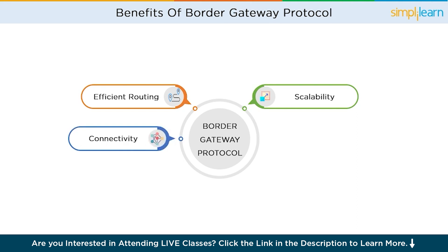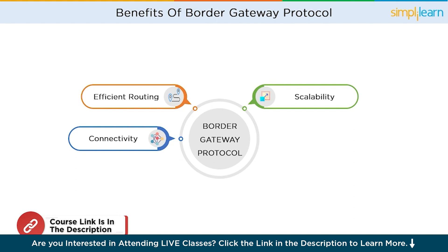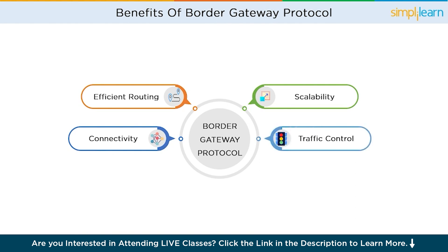Multi-home connectivity. BGP supports multi-home connectivity, which means that an organization can connect to multiple internet service providers simultaneously. This provides redundancy and load balancing, as BGP can automatically select the best path for data based on factors like available bandwidth and network conditions. Multi-home connectivity enhances network reliability and enables organizations to distribute traffic efficiently.